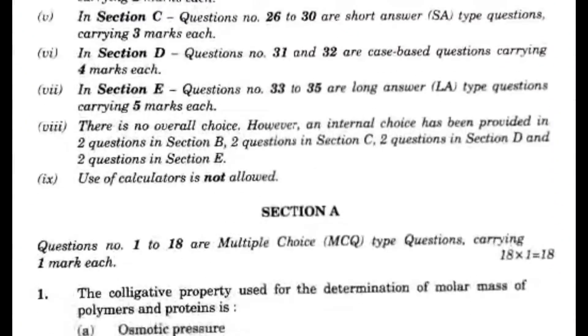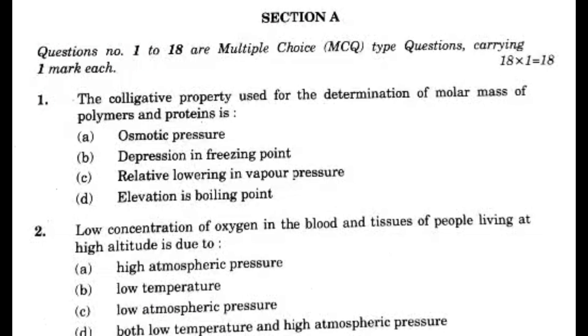Low concentration of oxygen in the blood and tissues of people living at high altitude is due to option C, low atmospheric pressure.